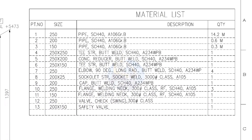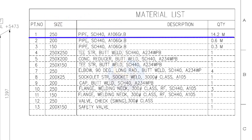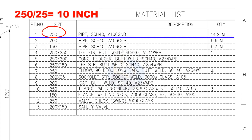Let us start with the material list. Part number 1: pipe nominal size is 250. If you want to convert this into inches, divide it by 25 and you will get the nominal pipe size in inches. What is the nominal pipe size of this 250 NB pipe in inches? Divide 250 by 25 — the answer is 10 inches.